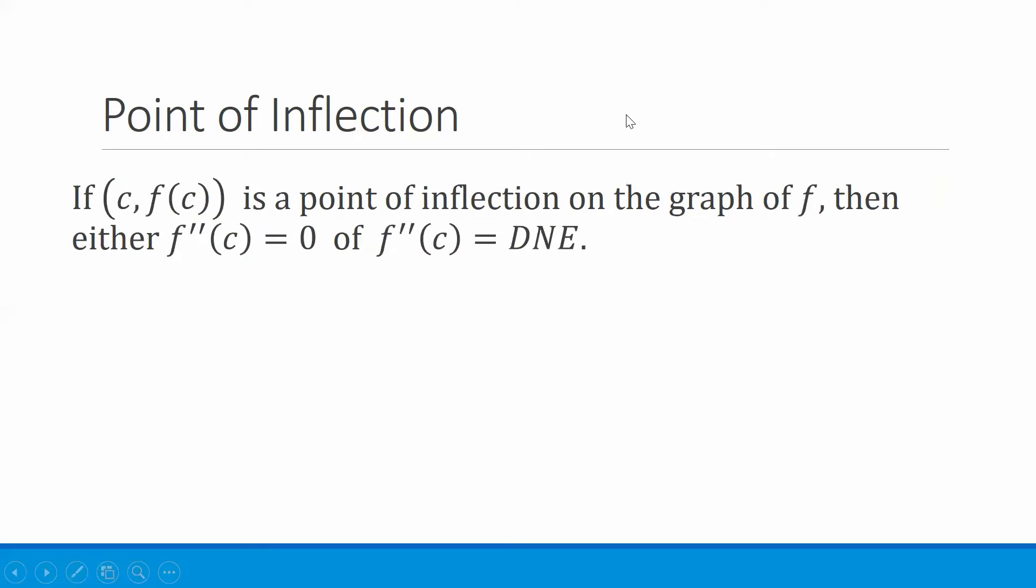So algebraically, that's exactly what we're going to be looking for. If a point, c comma f of c, is a point of inflection on the graph of f, then either the second derivative at c is zero, or the second derivative at c does not exist. These are kind of like critical values and critical points for the first derivative.